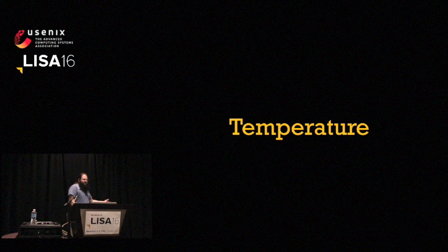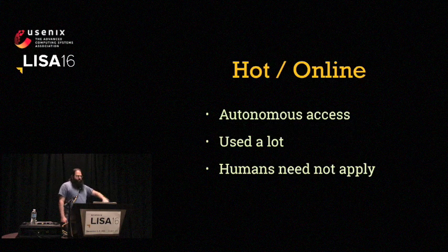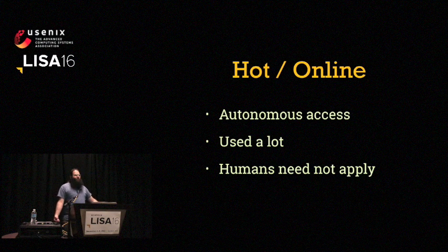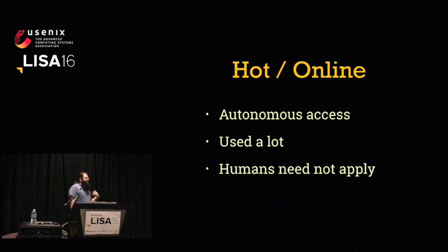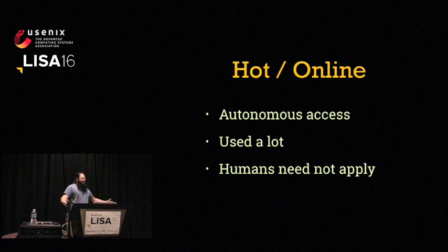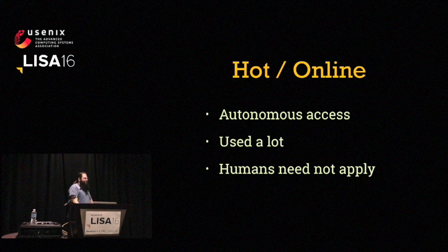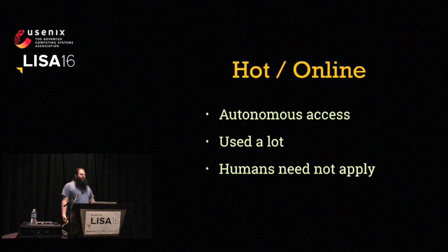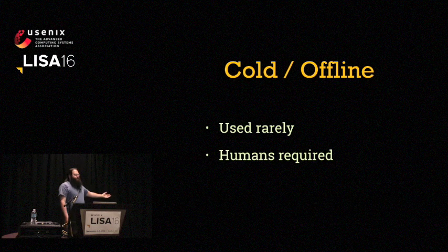Now we need to take their temperature. Hot or online secrets refer to things that are used during the normal operations of an infrastructure, meaning a server or service needs to be able to access the secret autonomously without human or operator intervention. For example, if you have a web server that needs to get to a database, it uses a password for that. If an operator had to type in the password every time a new web request came in, your application is probably not going to get a whole lot of work done.